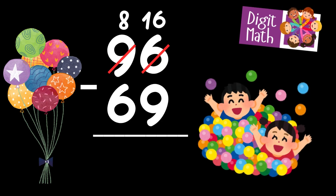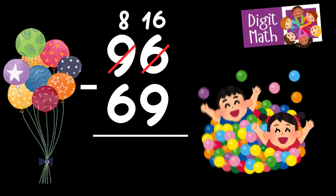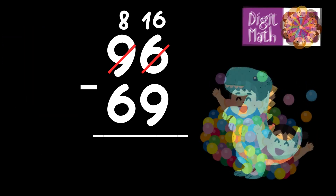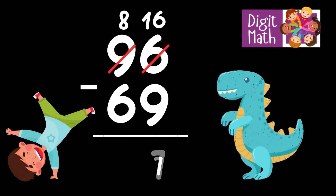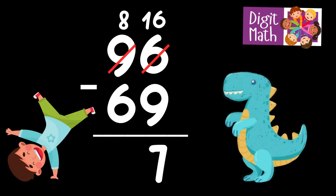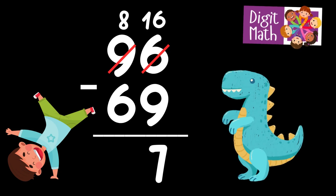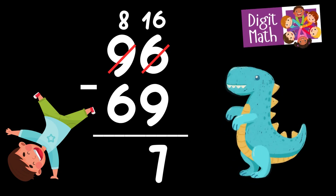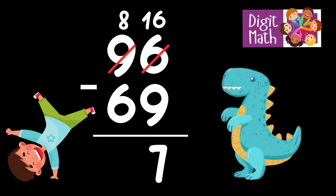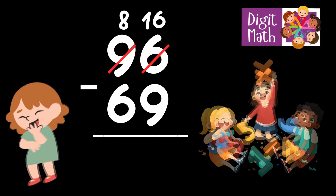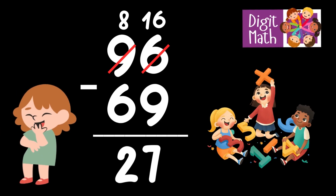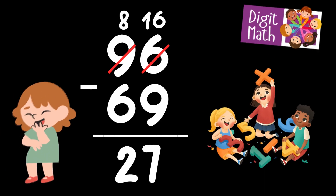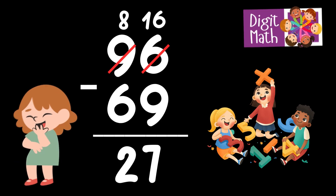Now we have 16 in the Units column. Subtract 9 from 16, which equals 7. In the Tens column, we now have 8. Subtract 6 from 8, which equals 2. So the final result is: 96 minus 69 equals 27.